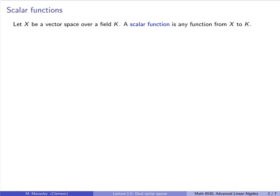A scalar function is any function from X to K. Previously, we've talked about what it means for a function f to be linear, a function between vector spaces X and Y. Now remember, if the dimension of X is finite, let's say it's n, that means that X is isomorphic to K to the n.